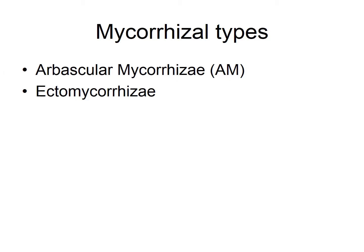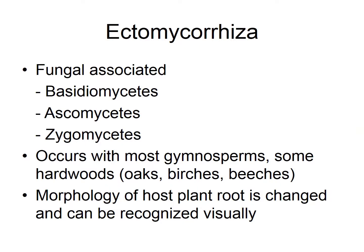We're going to talk in depth about two types of mycorrhizae. The first is the arbuscular mycorrhizae, also called endomycorrhizae, and the other is the ectomycorrhizae. We're going to start with the ectomycorrhizae. The fungal genera that form ectomycorrhizal associations usually belong to Basidiomycetes, Ascomycetes, and Zygomycetes. These fungal genera can form mycorrhizal associations with plants such as gymnosperms, hardwood, and other types of plants.